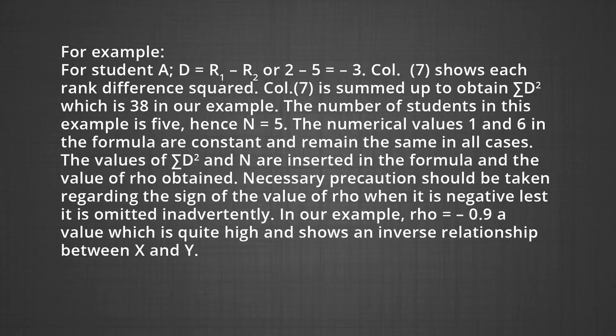The number of students is five, so n equals 5. The numerical values of 1 and 6 in the formula are constants and remain the same in all cases. The values of sigma D squared and n are inserted into the formula to obtain Rho. Necessary precaution should be taken regarding the sign of Rho when it is negative, lest it be omitted inadvertently. In our example, Rho equals minus 0.9, a value which is quite high and shows an inverse relationship between X and Y.